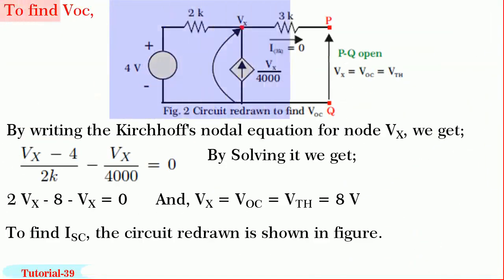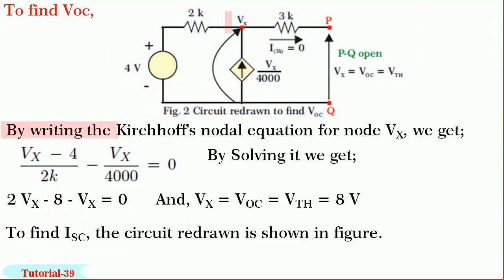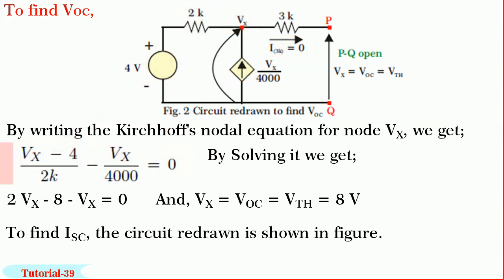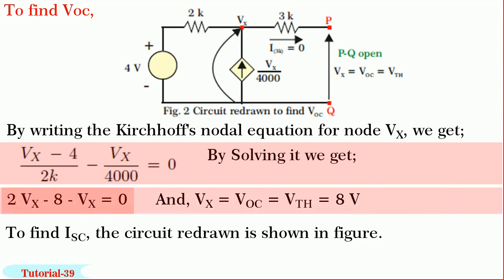Now, to find Voc, the circuit redrawn is shown in figure. By writing the nodal equation for the node Vx, we get (Vx − 4) / 2K − Vx / 4000 equals 0. Note: current through 3K resistance is 0. By solving, we get 2Vx − 8 − Vx equals 0, and Vx equals Voc equals 8 volts. So V-Thevenin equals 8 volts.